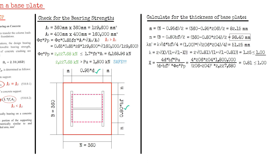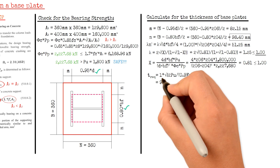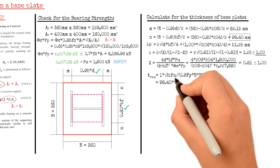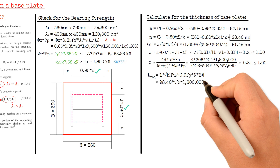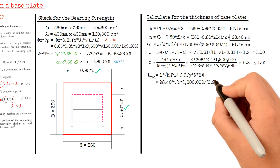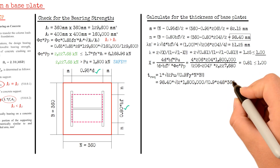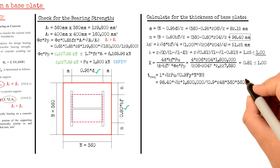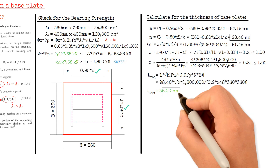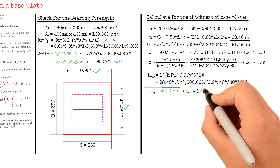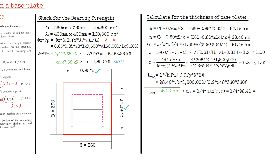The required thickness equals the largest of M, N, and gamma×N' — which is 98.4 mm — multiplied by √(2 × 1,800 kN / (0.90 × 248 N/mm² × 360 mm × 360 mm)). This gives a value of 35 mm. Comparing to the minimum thickness of one-fourth of the largest of M and N, which is 98.4 / 4 = 24.6 mm, the required base plate thickness is 35 mm.